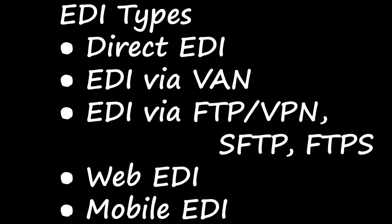The next type is EDI via FTP or VPN, SFTP, and FTPS. When protocols like FTP, VPN, SFTP, or FTPS are used for exchange of EDI-based documents through the internet or intranet, we call it EDI via FTP or VPN, SFTP, FTPS. The EDI documents are transferred using these protocols through the internet or intranet.